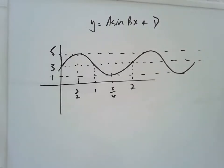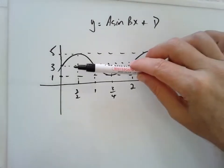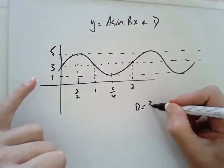So let's pick the easy ones first. Remember d, d is the center of motion, so clearly our center of motion here is 3.